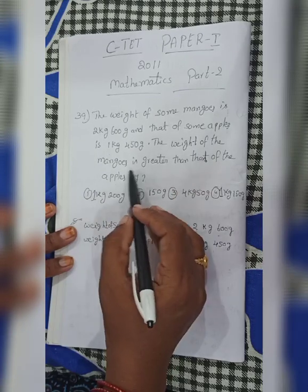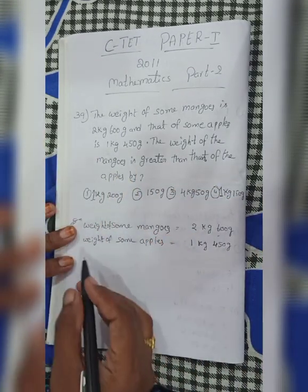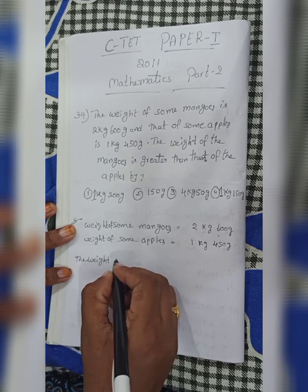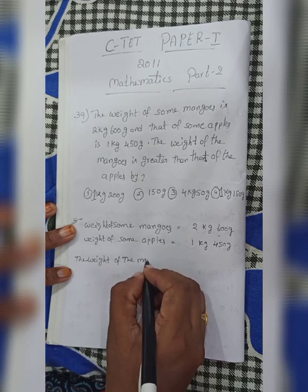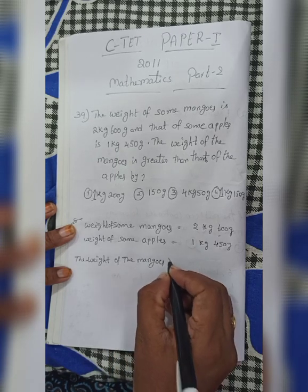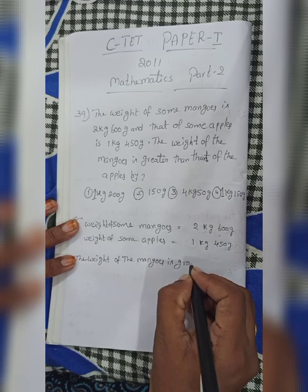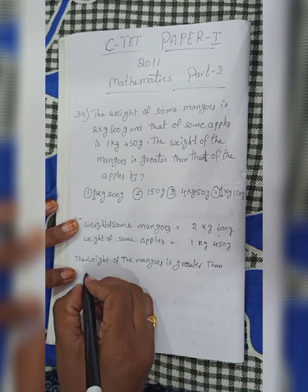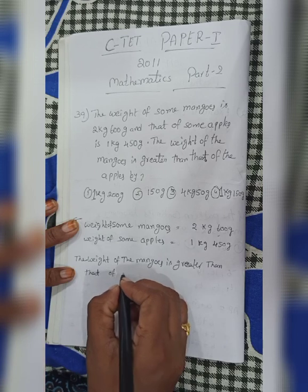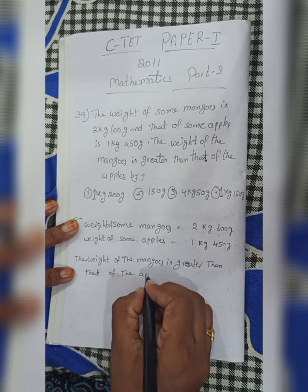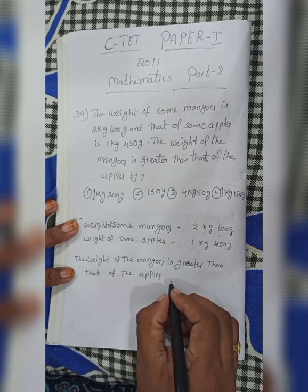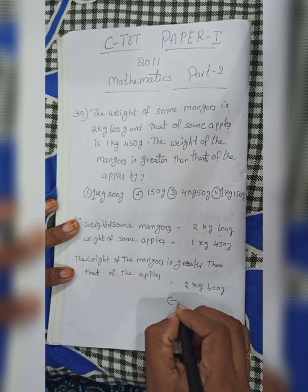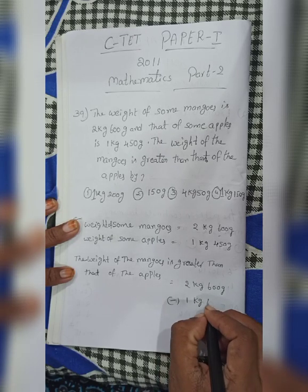What we are finding here: the weight of the mangoes is greater than that of the apples. That is equal to 2 kg 600 grams minus 1 kg 450 grams.